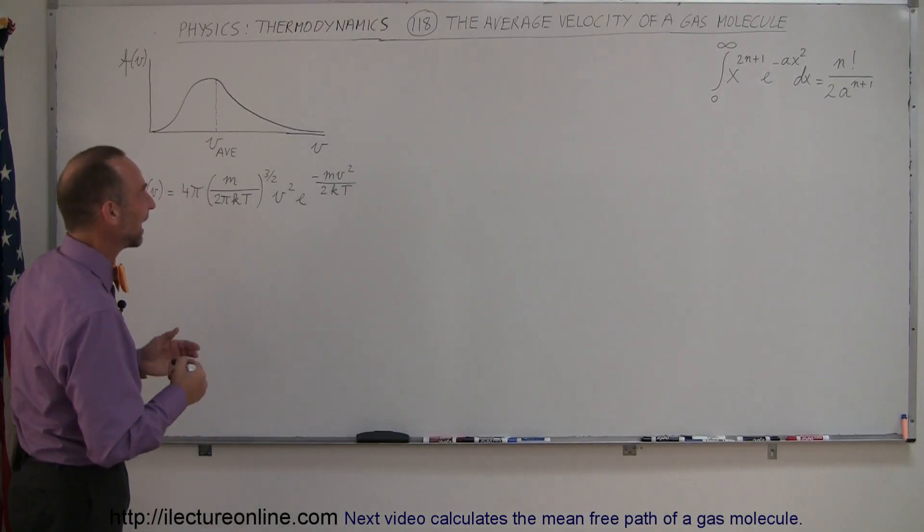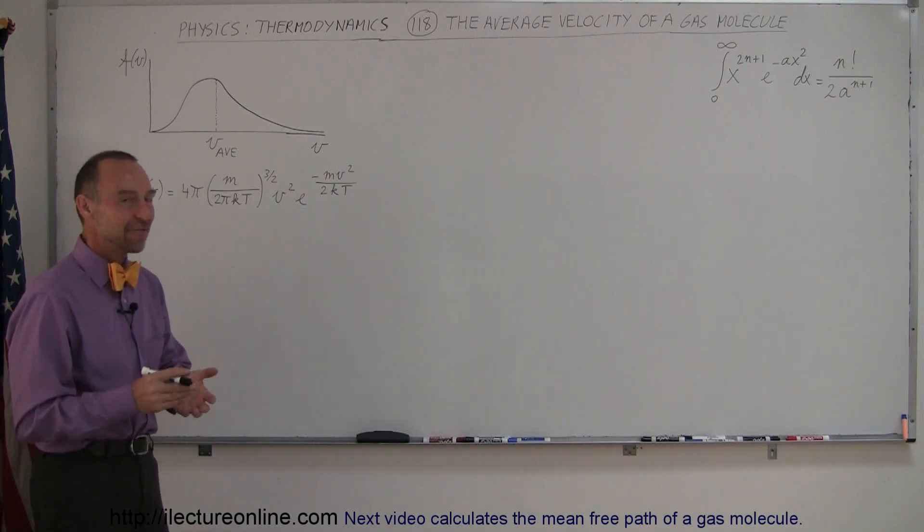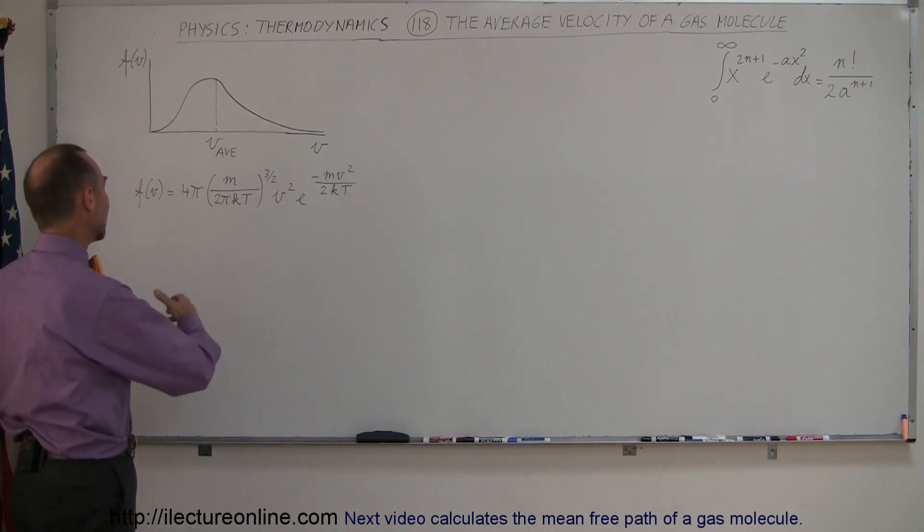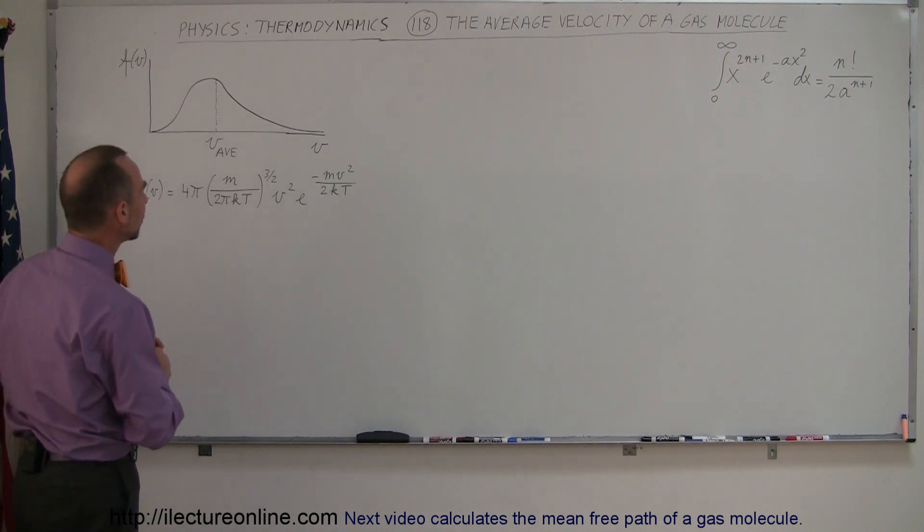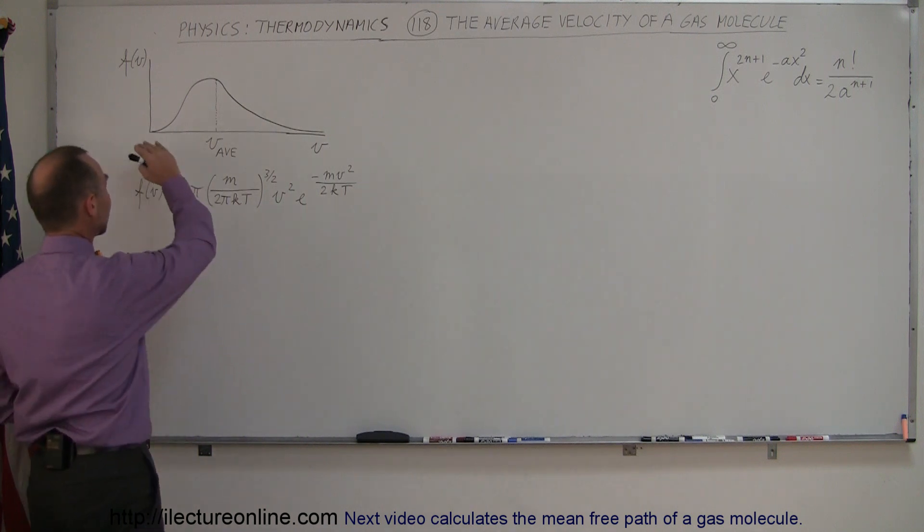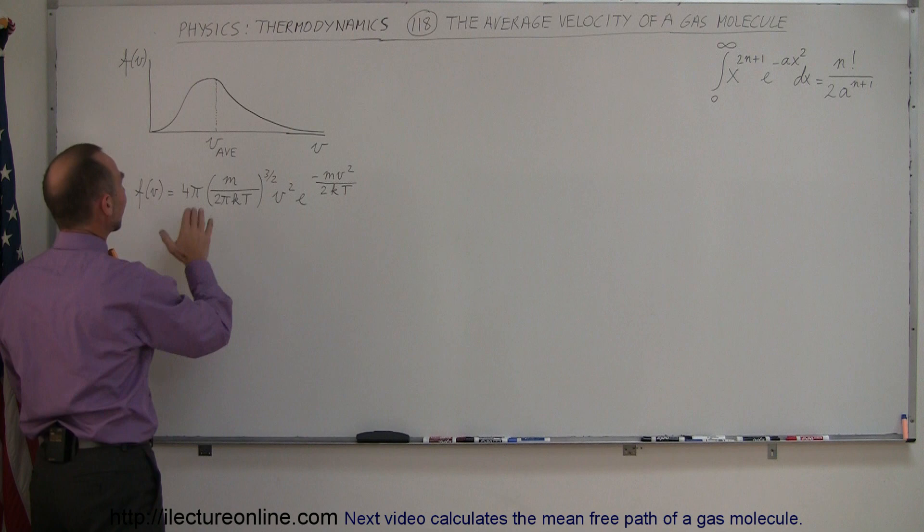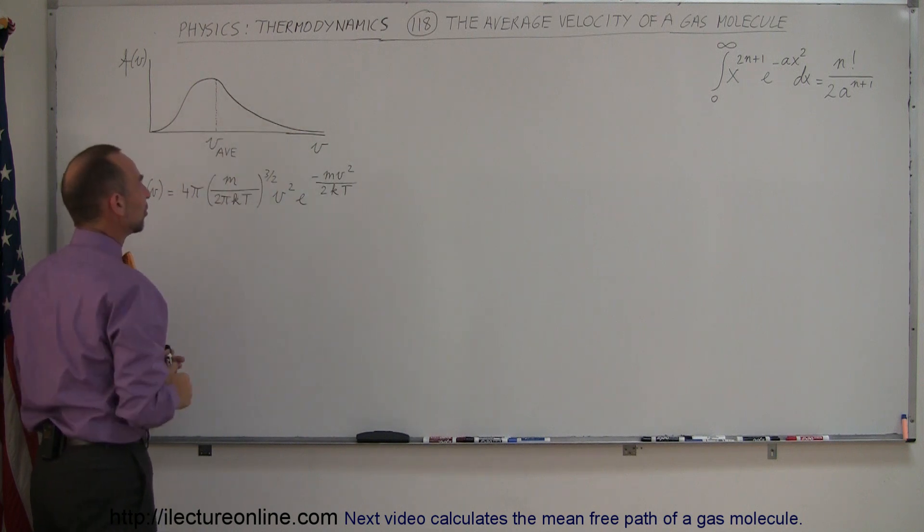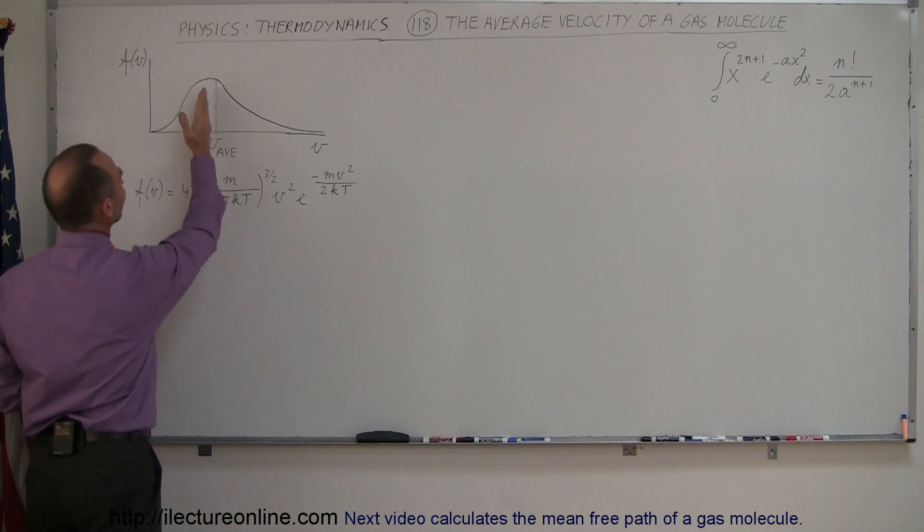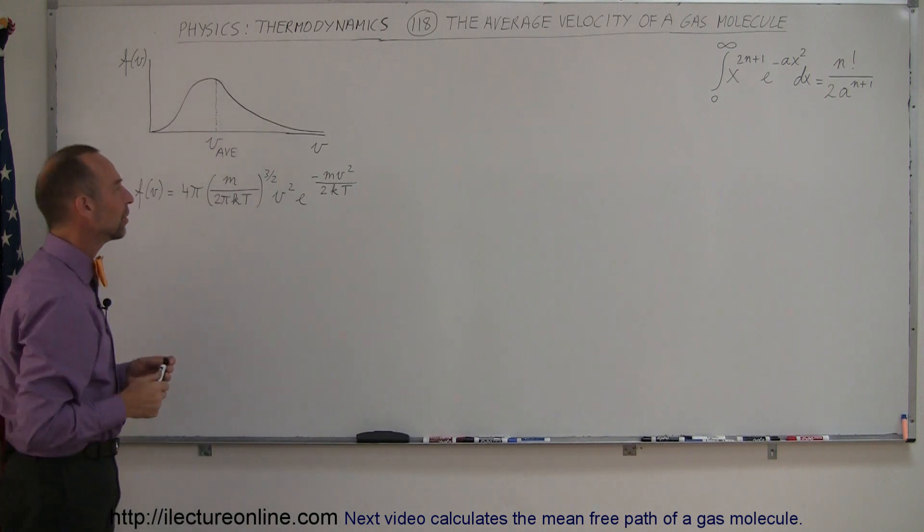Welcome to iLectra Online. Now we're going to talk about the average velocity of a gas molecule, again using the Maxwell-Boltzmann distribution of velocities for molecules in a gas. Here's a picture of it again. Notice that it's kind of an offset normal distribution curve, and therefore the average is a little bit to the right of the peak. So what is that number equal to?